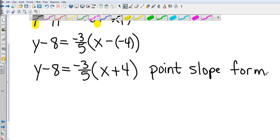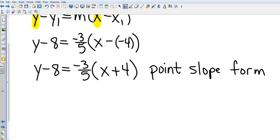If they wanted you to take this a step out and maybe put it in slope-intercept form, then we would just do the distributive property, then add eight to both sides because we would want y by itself. But right now that's just point-slope form. That's chapter three, section four, equations of lines.